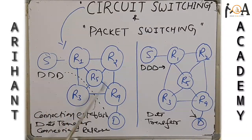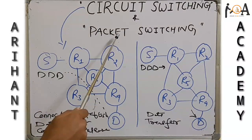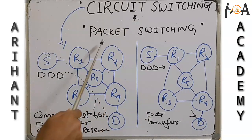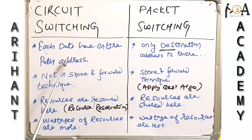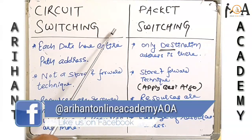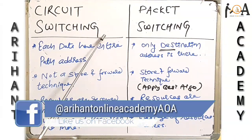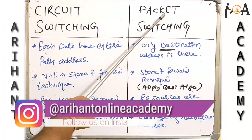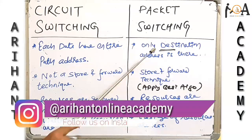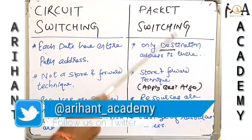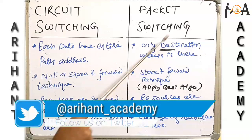Now let's see the differences between circuit switching and packet switching. In circuit switching, each data unit has an entire path address — because there is connection establishment, data transfer, and then termination, each data unit has the entire path address. Whereas in packet switching, only the destination address is there, because data is transferred directly and only the destination address is needed.